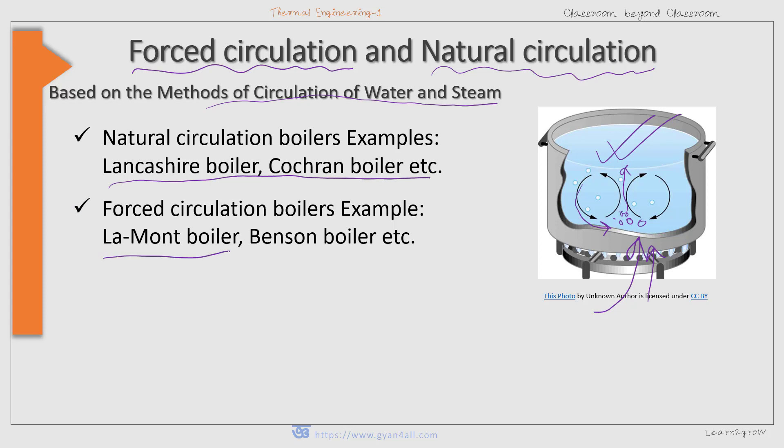Lamont and Benson boilers are examples of forced circulation boilers. Generally, all modern boilers are forced circulation boilers because modern boilers operate under high pressure and produce huge quantities of steam.